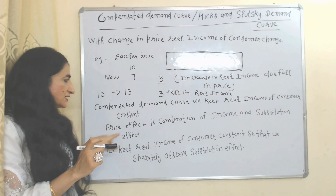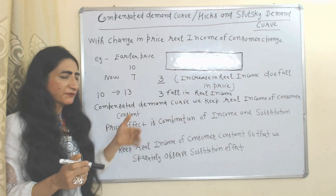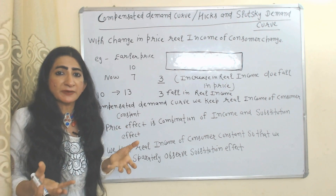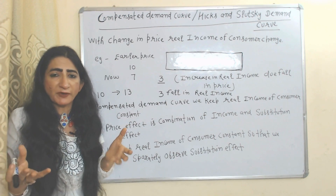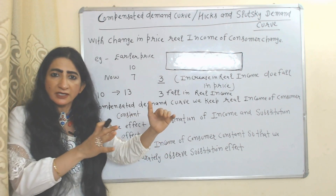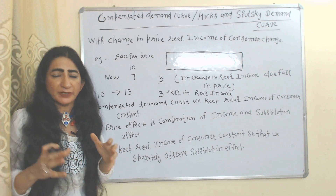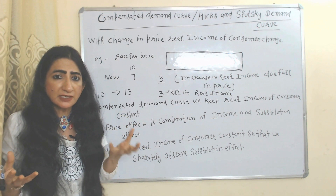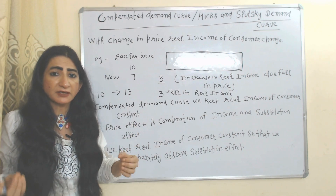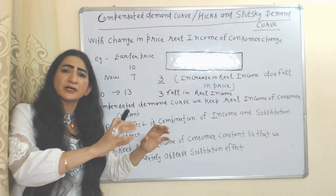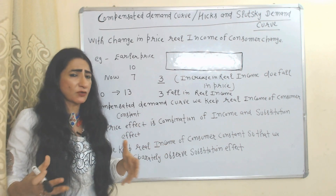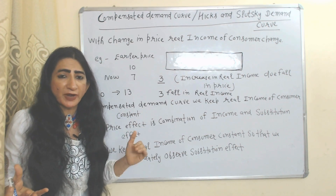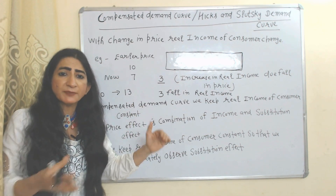The reason we do this is that the price effect is a combination of the income effect and the substitution effect. In order to separately see the substitution effect, we keep the real income of the consumer constant. In other words, to isolate only the substitution effect, we hold real income constant.